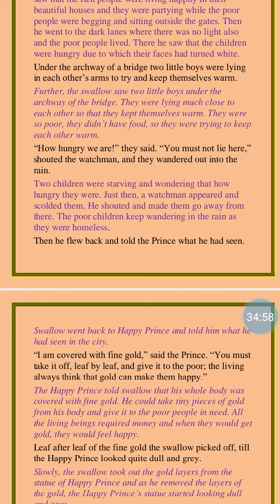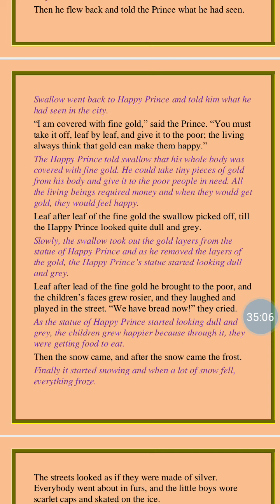Then he flew back and told the prince what he had seen. 'I am covered with fine gold,' said the prince. 'You must take it off, leaf by leaf, and give it to the poor. The living always think that gold can make them happy.' The Happy Prince said his full body was decorated with leaves made of gold, and the swallow had to take them one by one and help the poor people. So leaf after leaf of the fine gold the swallow picked off, till the Happy Prince looked quite dull and gray. The swallow started picking the golden leaves from the body of the Happy Prince and giving them to the poor and miserable people. By doing this the Happy Prince was no longer beautiful.